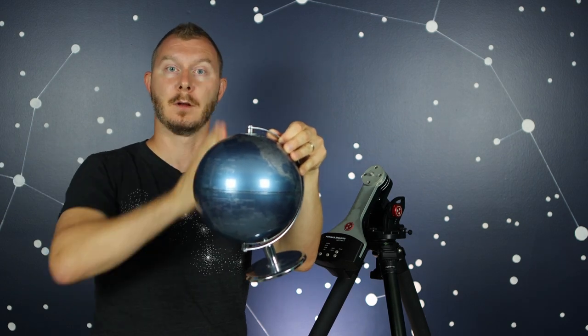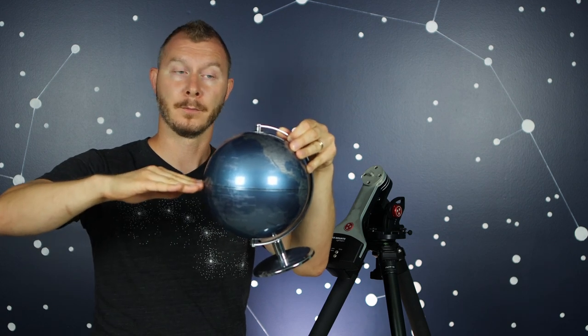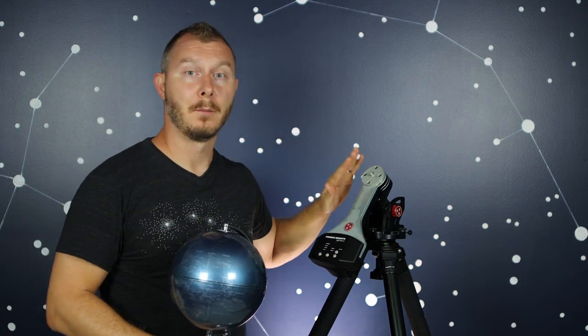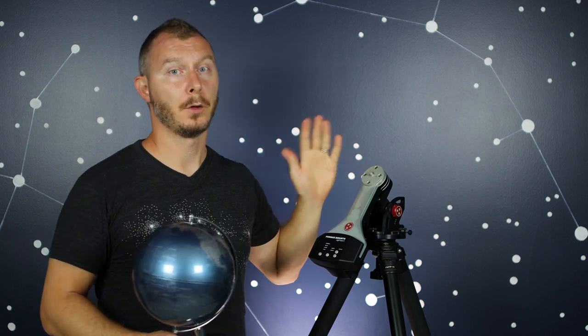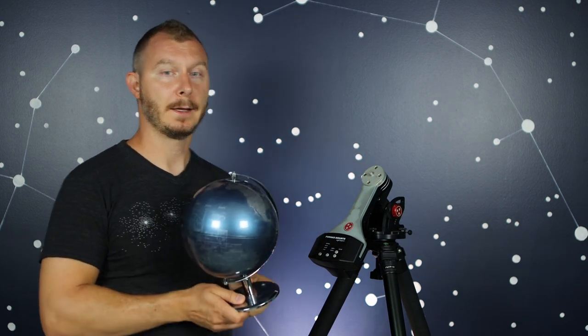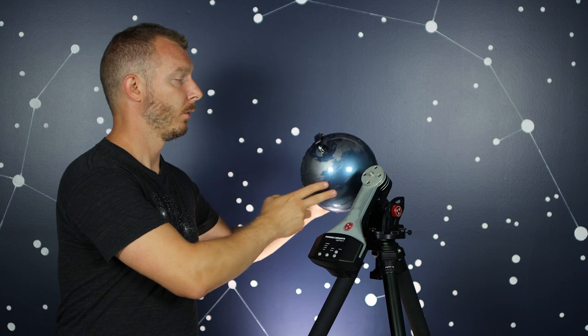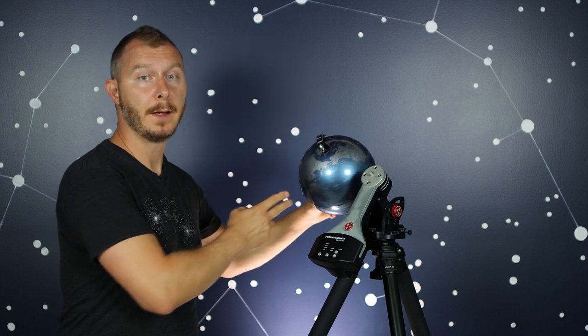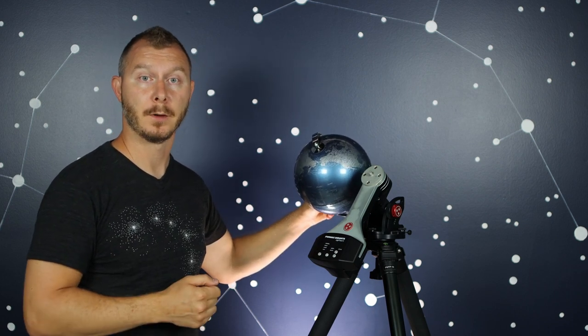So what we're essentially doing by polar aligning is taking our mount and we're moving it in alignment with the polar axis of the Earth. So from the mount's point of view, if not your point of view, it's going to seem like it is at one of those poles. And that's the whole reason and theory behind why we do this.